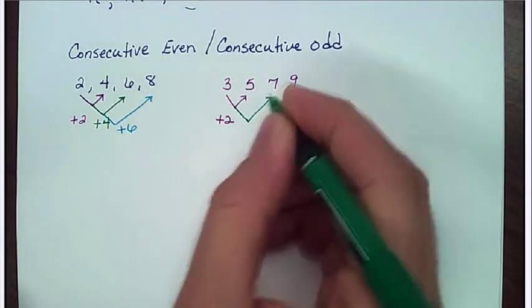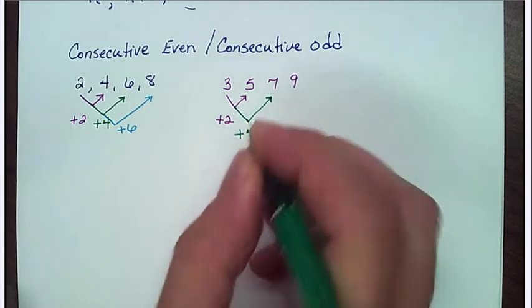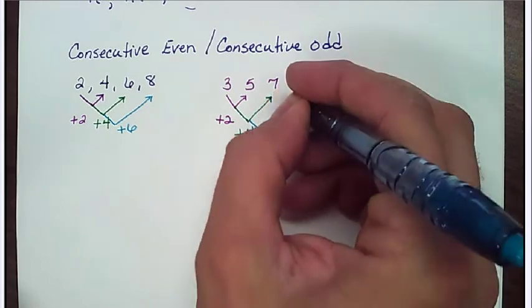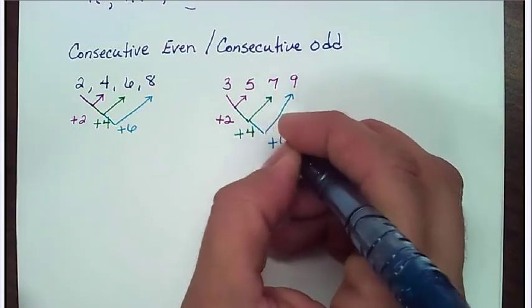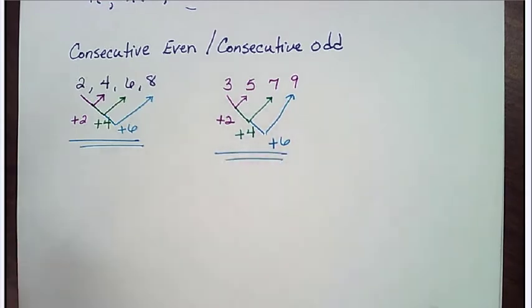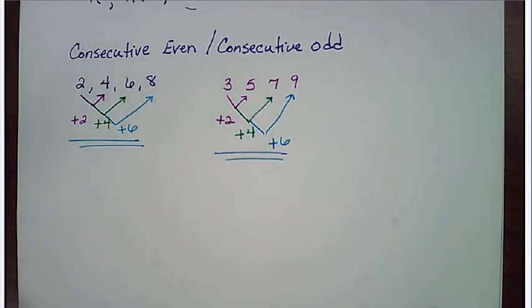If I go from 3 to 7, what am I going to add? Well, I'm going to add 4. And then if I go from 3 to 9, what am I going to add? Well, I'm going to add 6. Notice that they're the exact same pattern whether you're consecutive even or consecutive odd. And that's what I want to show you.